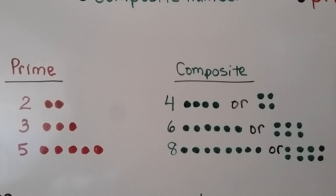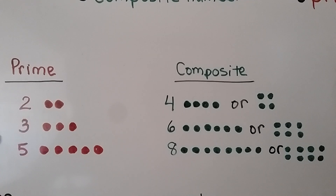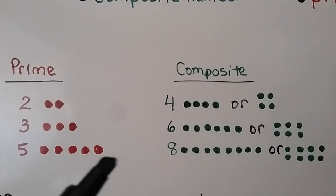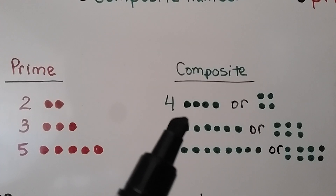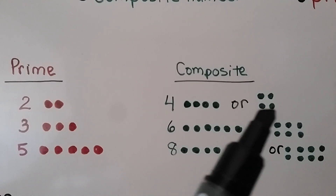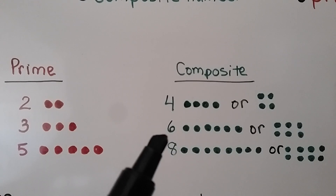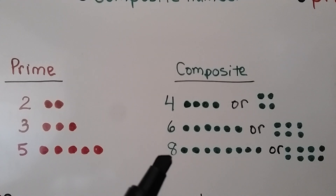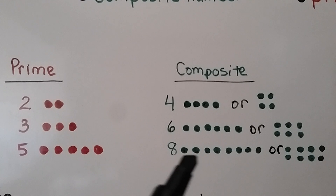We can look at prime and composite numbers as arrays. For the prime number 2, we only have one array: 1 times 2. For prime number 3, only 1 times 3. For prime number 5, only 1 times 5. But for a composite number like 4, we can make 1 times 4 or 2 times 2. For composite 6: 1 times 6 or 2 times 3. For composite 8: 1 times 8 or 2 times 4.